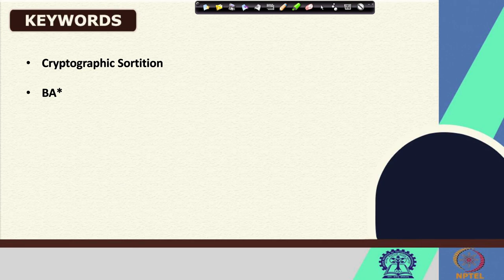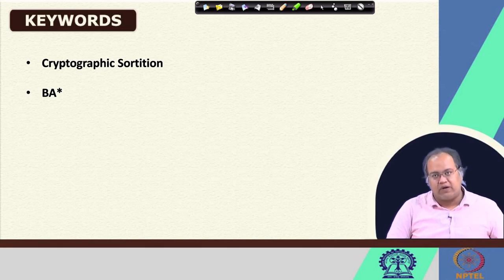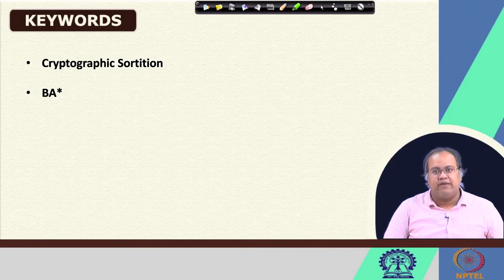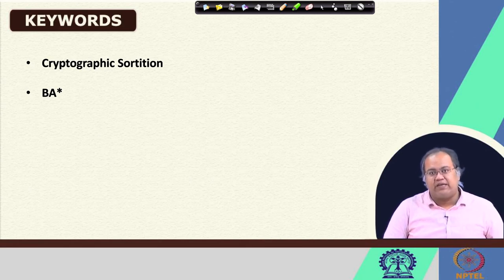The topics we are going to cover today include the methodology used in Algorand called cryptographic sortition. We are going to learn what is meant by cryptographic sortition, and then we will learn about the BA star mechanism used in Algorand. BA star basically means repeated Byzantine agreement, and we will see how that repeated Byzantine agreement helps Algorand achieve internet-scale scalability.